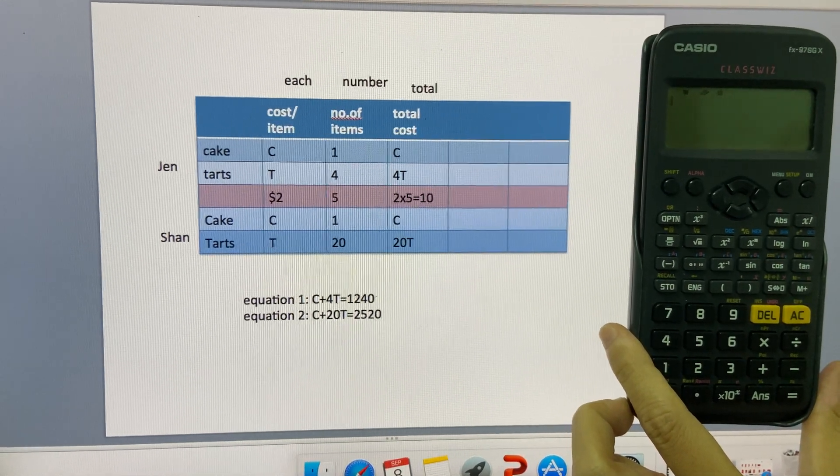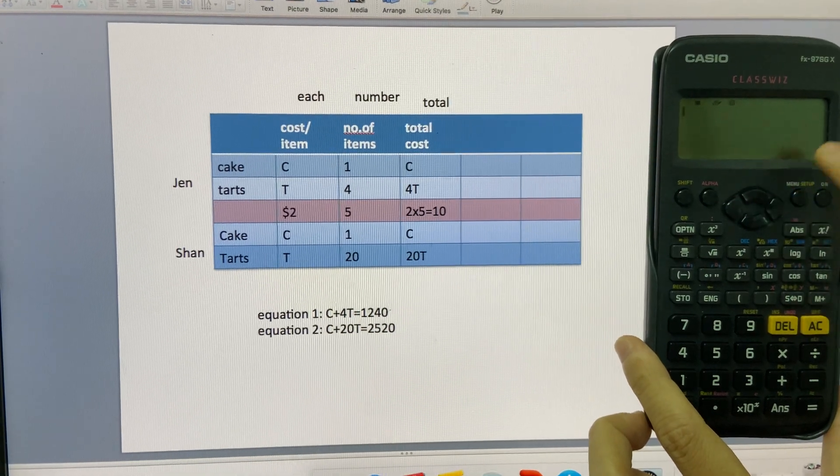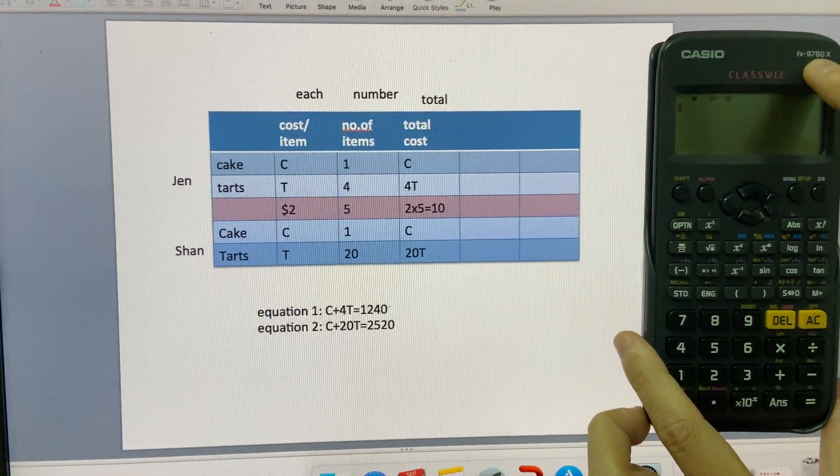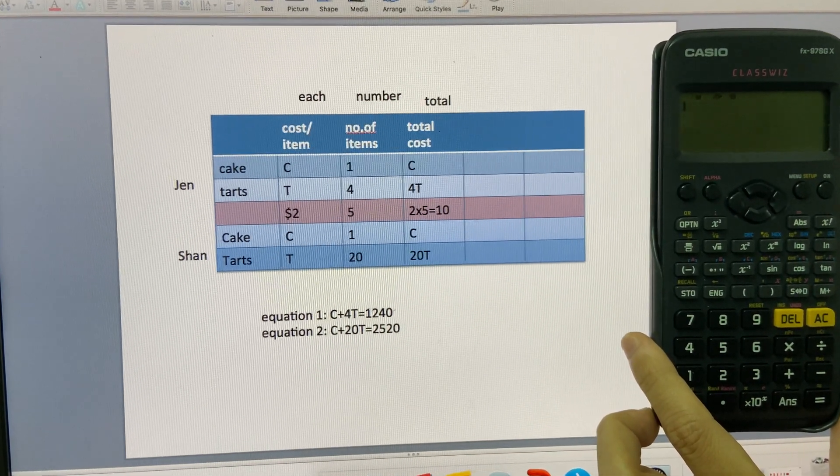Today I'm going to talk about how you can use this calculator. Remember the model here - the model is Casio FX97SG8.